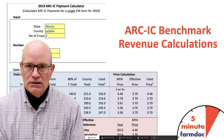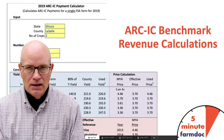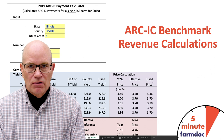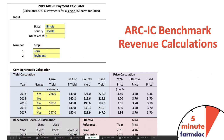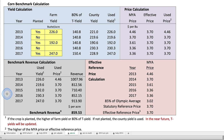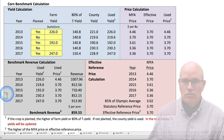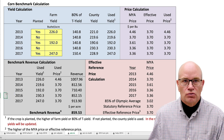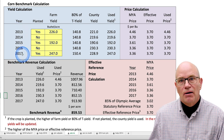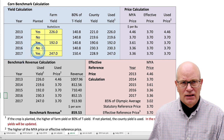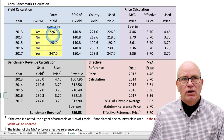This is Gary Schnitke and this is a five-minute FarmDoc daily dealing with benchmark revenue calculations under ARC-IC. For 2019, yields and prices for 2013 through 2017 will determine our benchmark revenue, and we will have to enter those 2013 to 2017 yields for each crop on our FSA farm. I have an example here from LaSalle County.